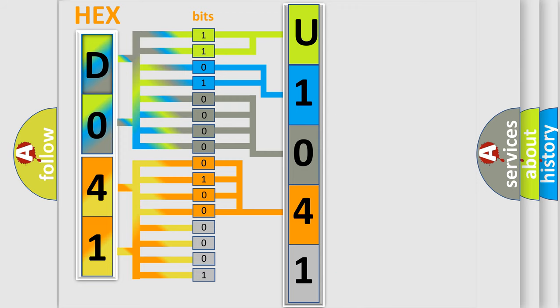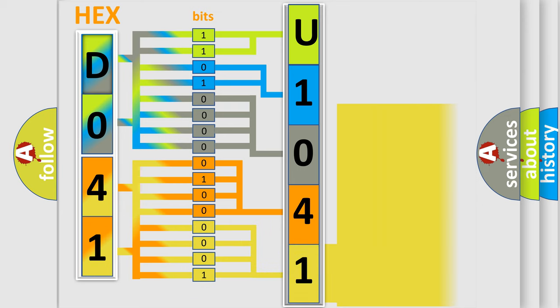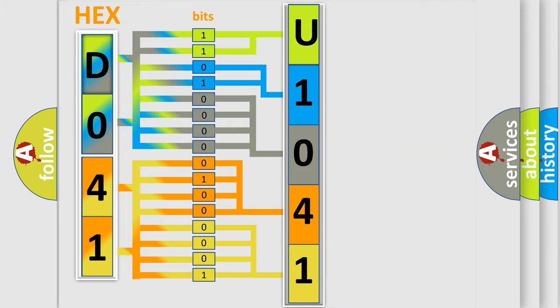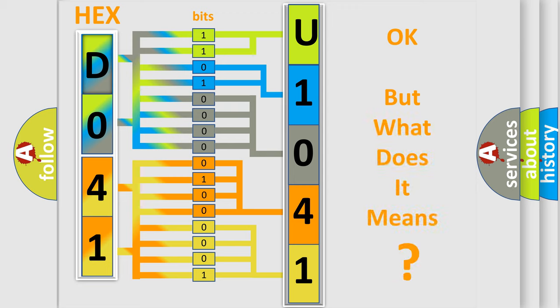A single byte conceals 256 possible combinations. We now know in what way the diagnostic tool translates the received information into a more comprehensible format. The number itself does not make sense to us if we cannot assign information about what it actually expresses.